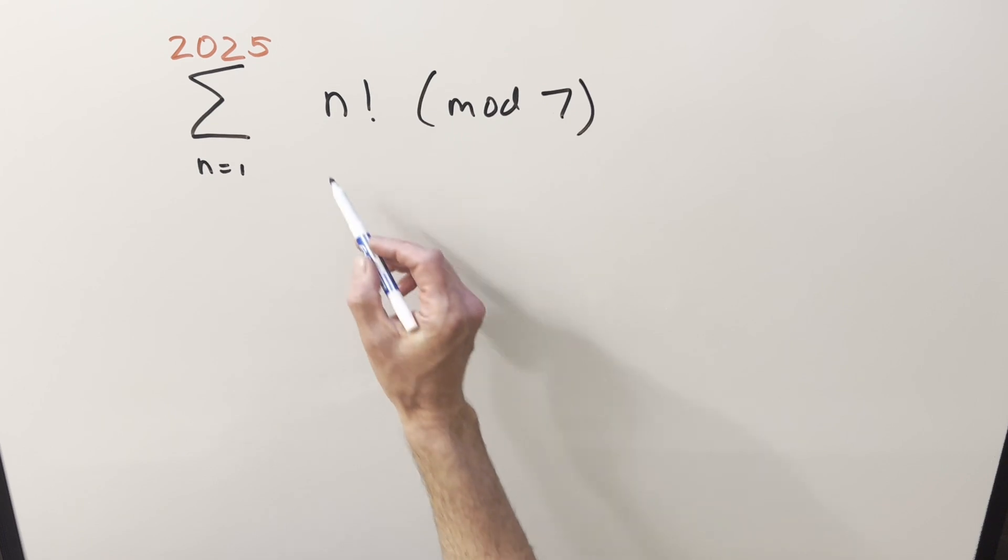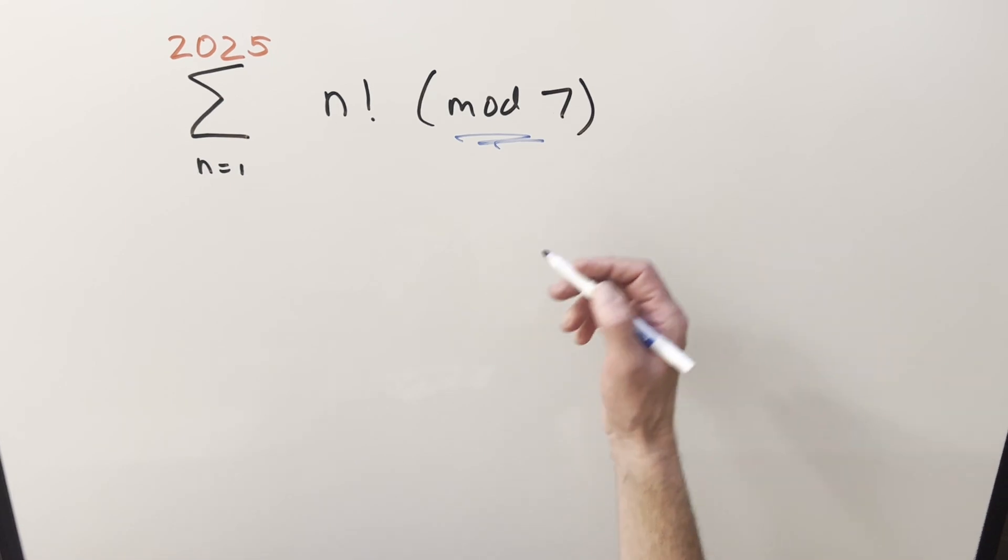The first thing I want to do very briefly is just introduce this idea of modular arithmetic here. It's going to be pretty simple. We're not going to get too far into it but really we're just talking about division with remainders.